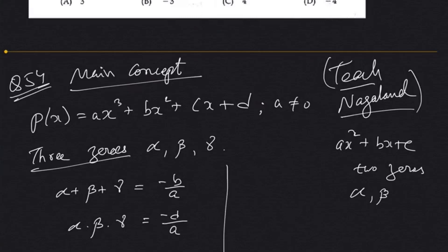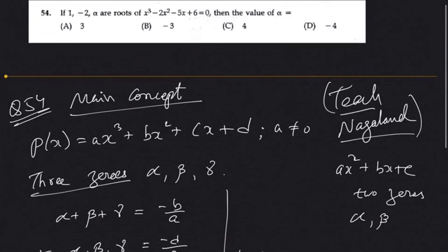There is one more concept, but for this particular question these two are enough. Now comparing the coefficients: our given polynomial is p(x) = x³ − 2x² − 5x + 6.